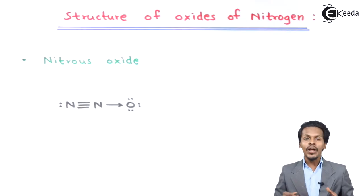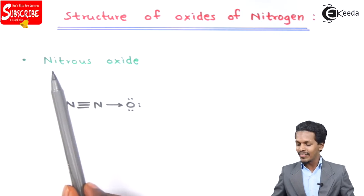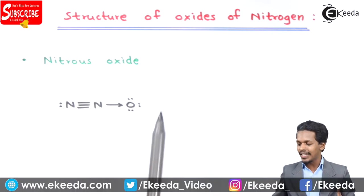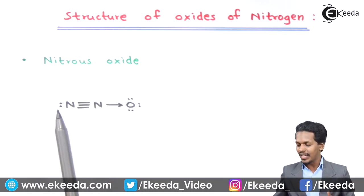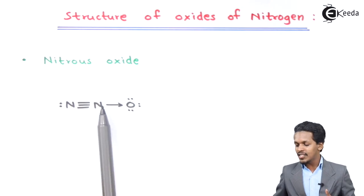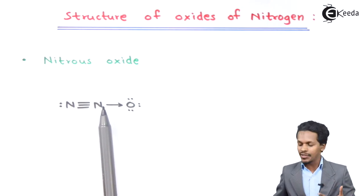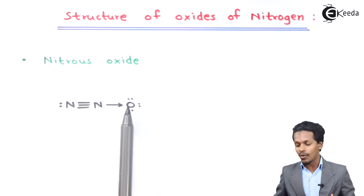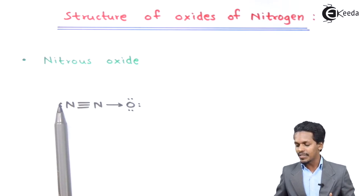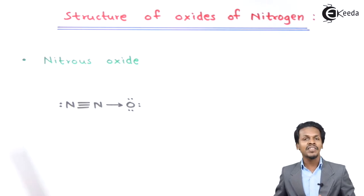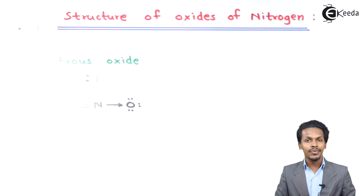In this topic we are going to talk about the Oxides of Nitrogen, starting with the first one — Nitrous Oxide, which has a chemical formula N₂O. This structure is linear, and there is a triple bond between the two Nitrogen atoms. The lone pair of Nitrogen is coordinately covalently attached to the Oxygen atom, and there is also a lone pair on this Nitrogen. So this is the structure of Nitrous Oxide.